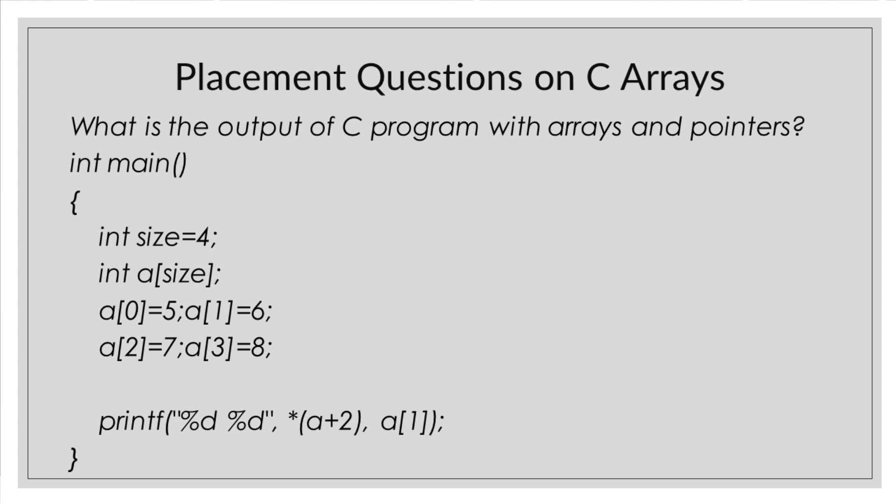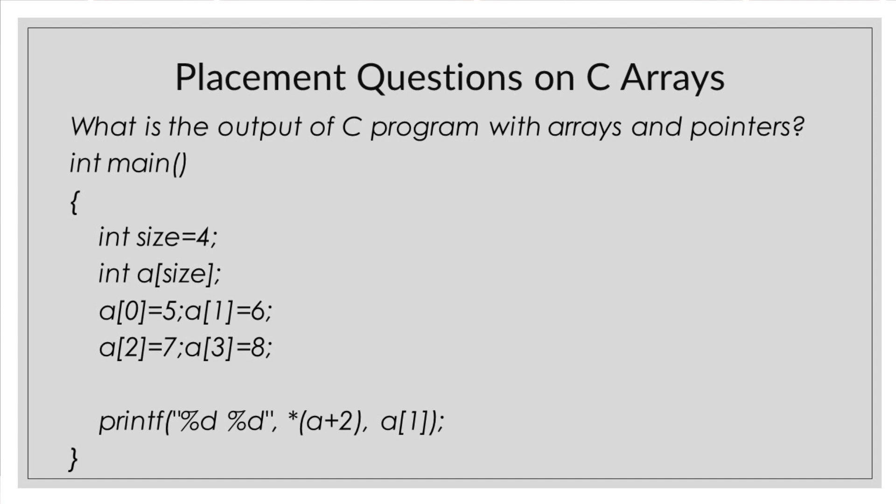Thereafter we see that we have been initializing the values of different elements of the arrays like a0 is 5, a1 is 6, a2 is 7, and a3 is 8. Now the question says what will be the output? We have already discussed that not only we can access the elements of the arrays using square bracket, we can also access through pointers. We have value at a plus 2, which gives the value of the array. The output would be 7 and 6. Because variable size is already defined so it will run and value at a plus 2 will be equal to a2. So we'll have values which will print 7 and 6.